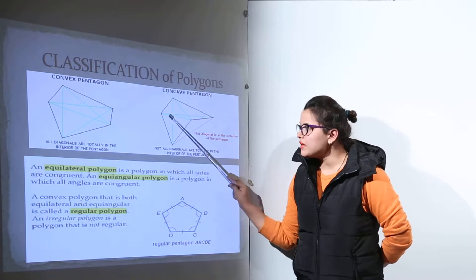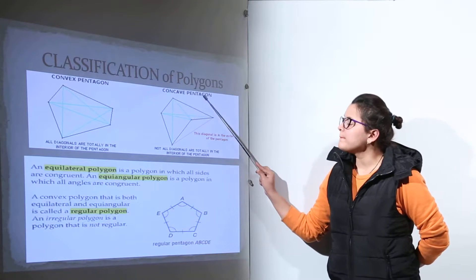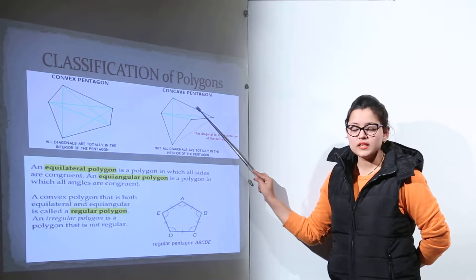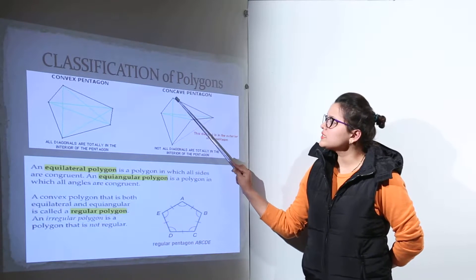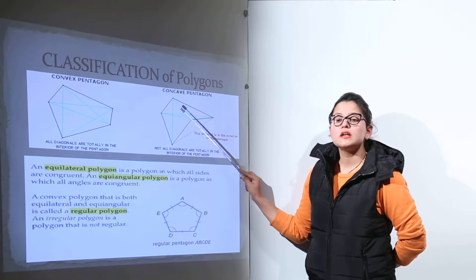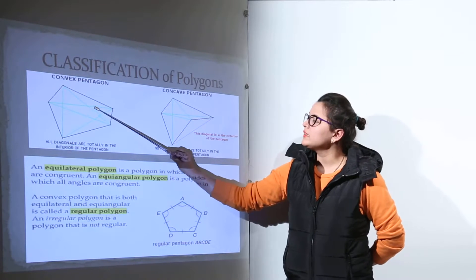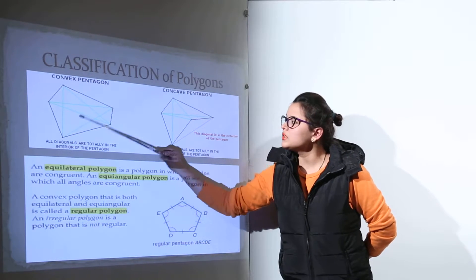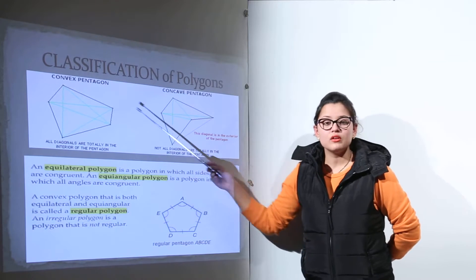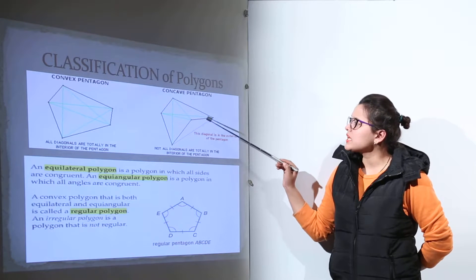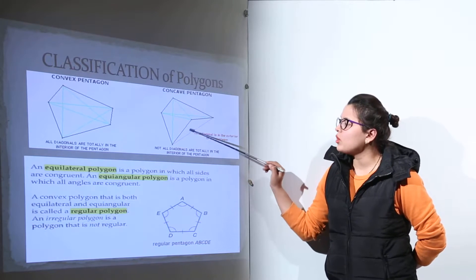The polygon in which all the diagonals are lying inside the polygon — such polygons are known as convex polygons. The polygons in which some of the diagonals are lying inside, or they might lie outside also — some of them might lie outside the pentagon or the polygon — such a polygon will be known as the concave one. Because both have five sides, we have named them convex pentagon and concave pentagon. If even one diagonal is present outside the polygon, we would name it as the concave polygon.